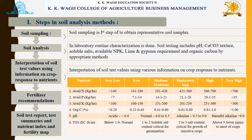The next step is interpretation of soil test values using information on crop response to nutrients. Then fertilizer recommendation is the next step. For recommendation of particular fertilizers, we use a chart that lists nutrients and their ratings as per the 6-star system. On that basis, fertilizers can be recommended to farmers based on the soil testing report, which is prepared and forwarded to the farmers for further treatments to their fields.